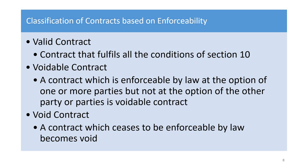In between valid and void, there is voidable. A voidable contract is one which is enforceable by law at the option of one or more parties but not at the option of the other party. If one party has broken their promise, the other party can choose to accept it — making it remain valid — or not accept it, making it void. So a voidable contract can be either valid or void at the discretion of one party, not both.